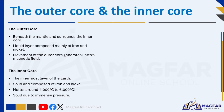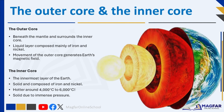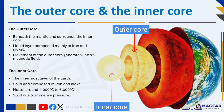The outer core is a liquid layer composed mainly of iron and nickel. It lies beneath the mantle and surrounds the inner core. The movement of the outer core generates Earth's magnetic field. The innermost layer of the Earth is the inner core, which is solid and composed of iron and nickel. It is way hotter, around 4000 to 6000 degrees Celsius. It is essentially a solid ball with a radius of about 1200 km, about 70% of the size of the Moon. Despite the high temperatures, the inner core remains solid due to immense pressure.